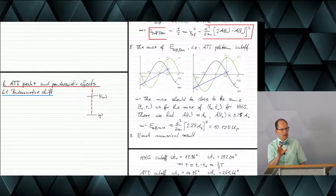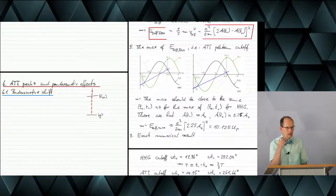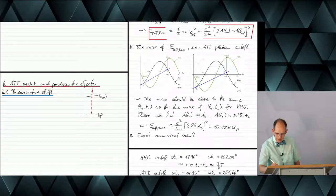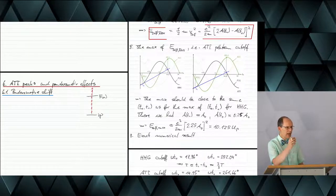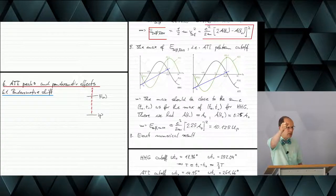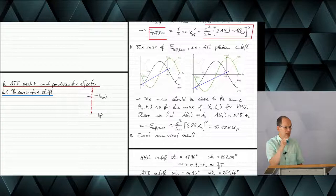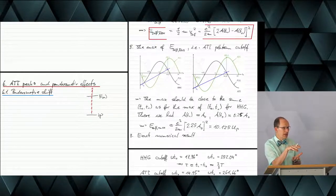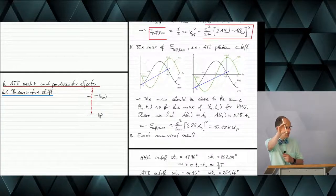But now if you think about the situation in a little bit more detail, you would say: if I produce such an electron in the continuum, then this electron in the continuum will be a free electron. So if I want to put an electron in the continuum and there's still the laser, then this electron must have the quiver energy — must have the ponderomotive energy.